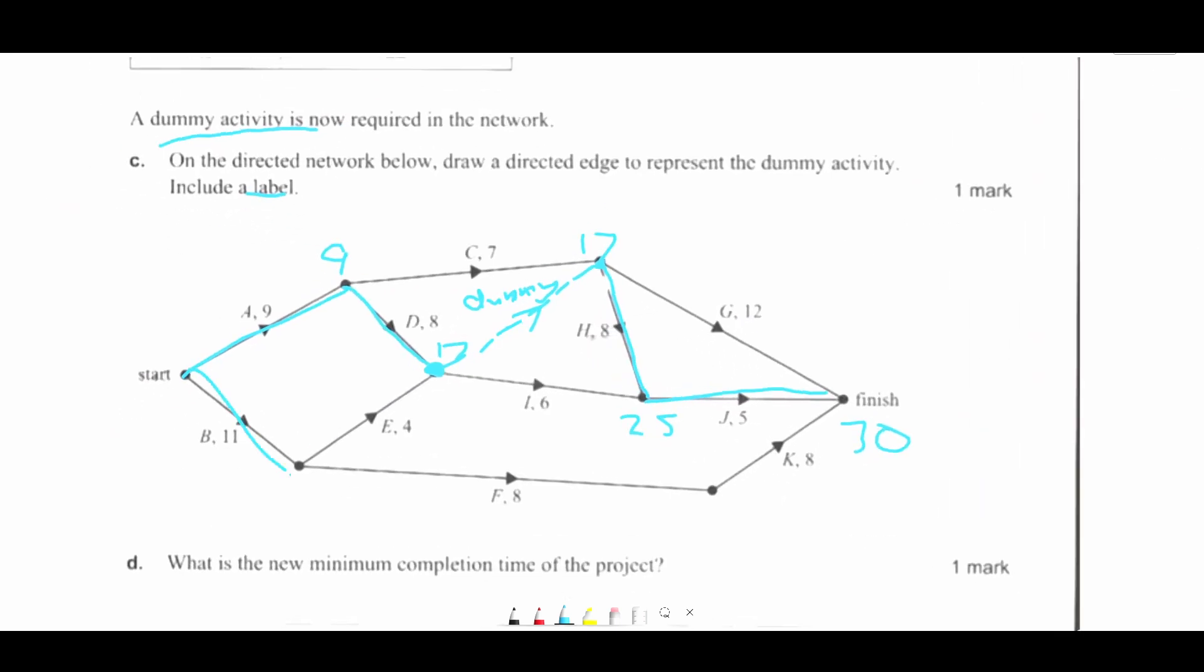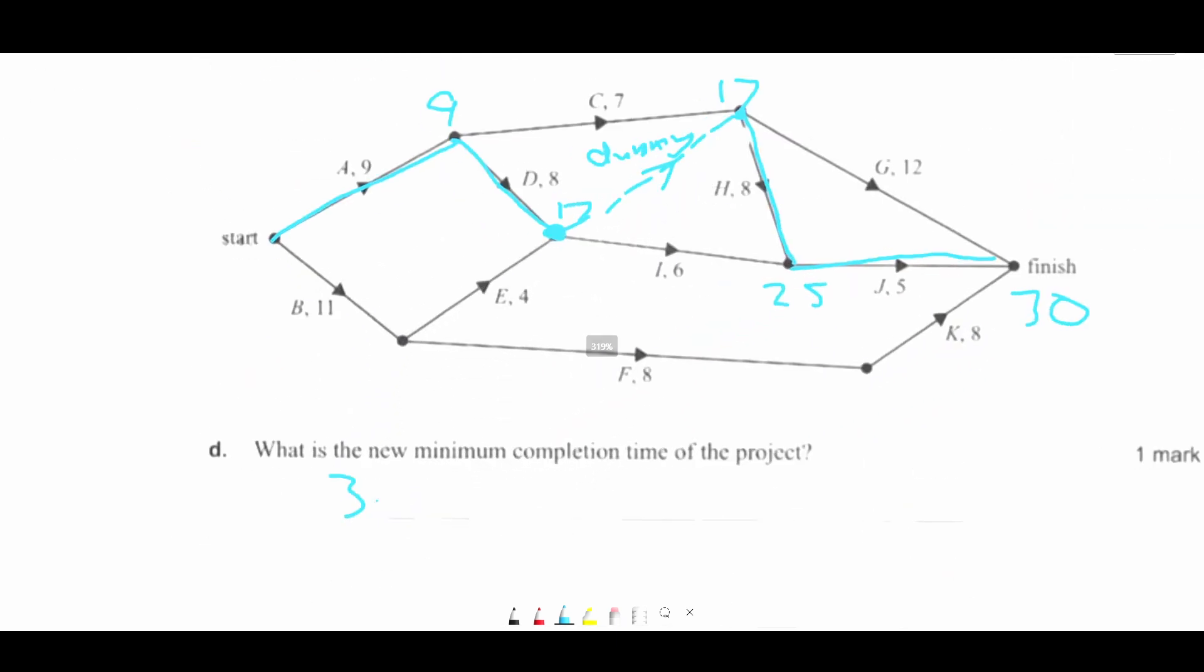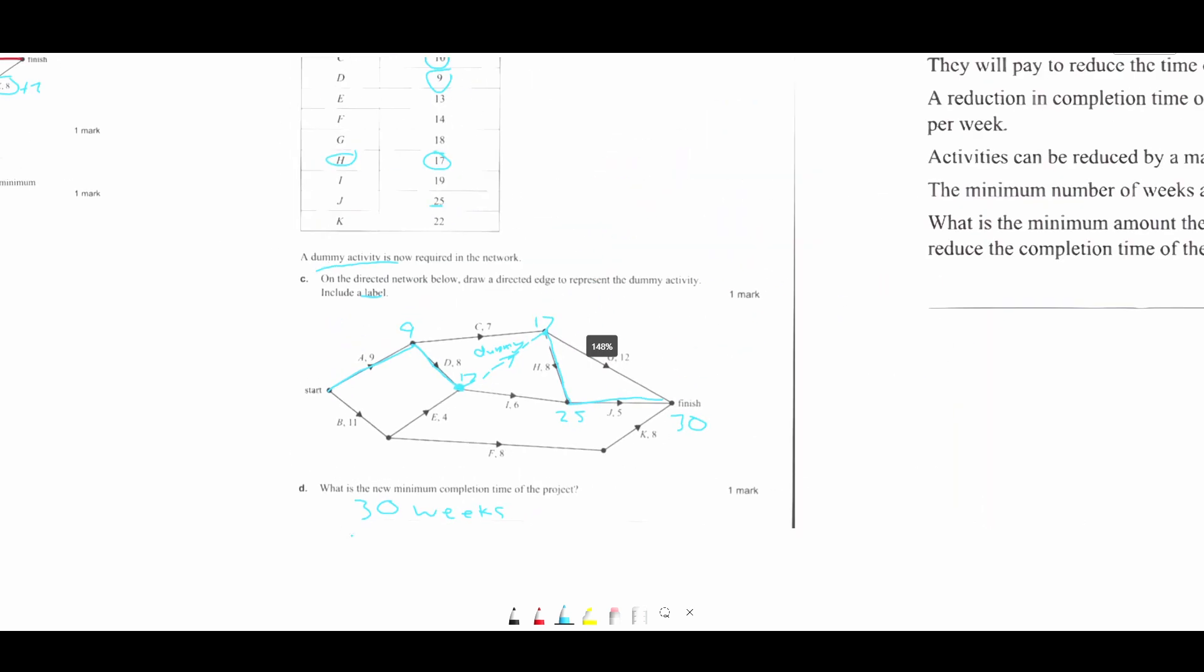11 plus 4 is 15, which is lower. And this is lower than 30. So 30 should be the critical time, the minimum time, the minimum completion time, 30 weeks.